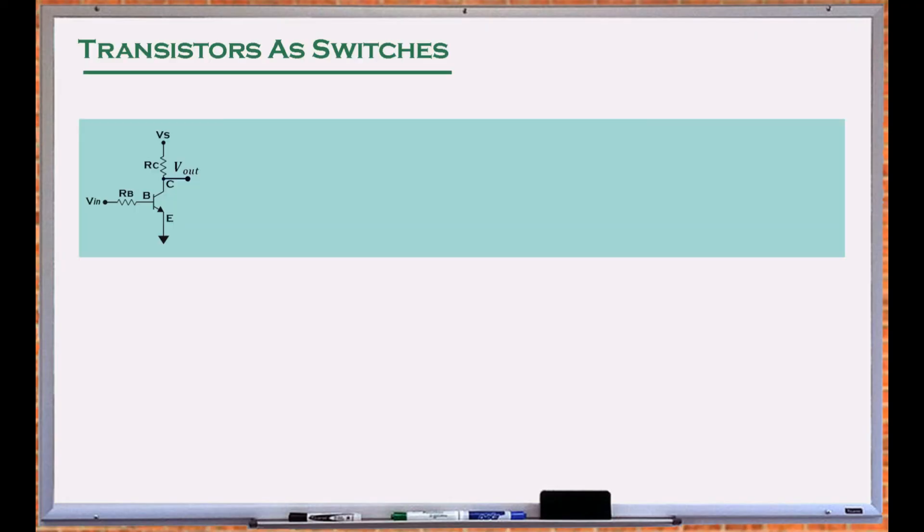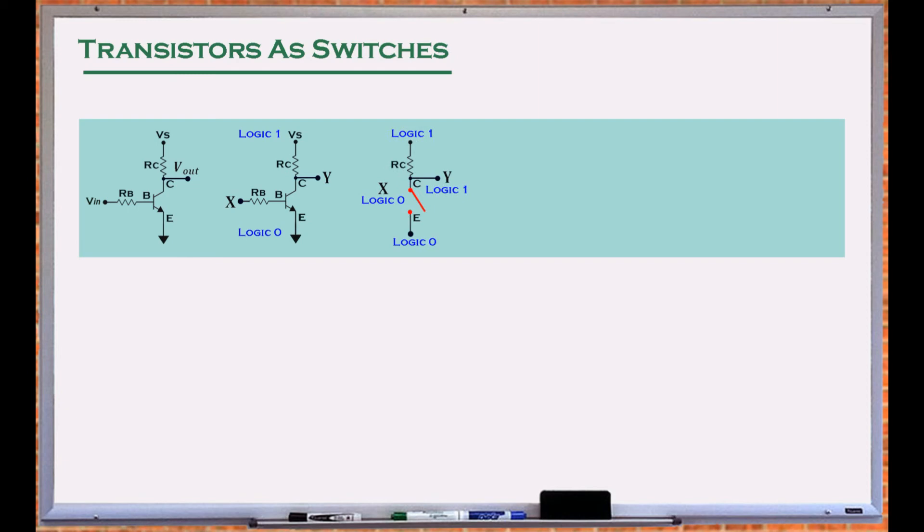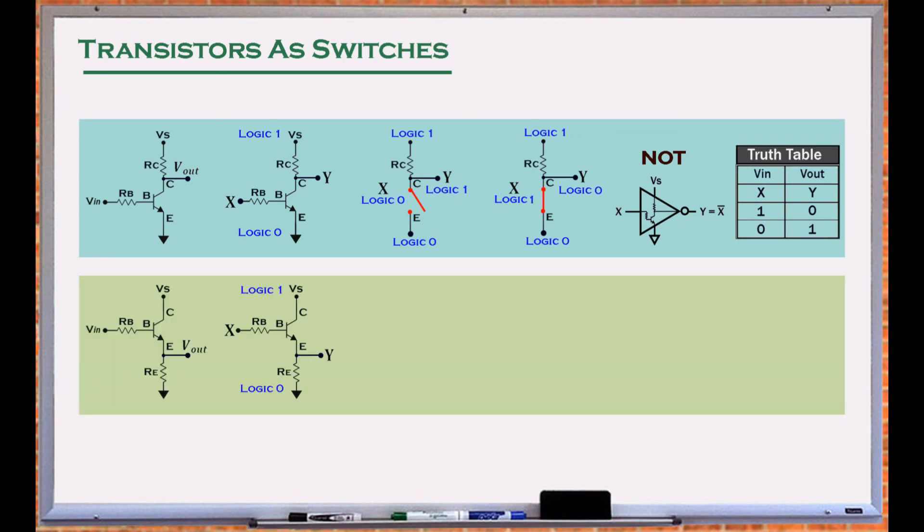Transistors, when used as switches, are the basic building blocks of all logic gates. As a switch, 0 volts defines logic low, and the supply voltage level defines logic high. If the input of the NPN circuit is at logic 0, the transistor is in its cut-off region. It acts as an open switch resulting in logic 1 at the output. On the other hand, if the input is at logic 1, the transistor is in its saturation region and on, making the output logic 0. This circuit works as a NOT gate. Similarly, we can verify the circuit of a non-inverting switch, or a buffer gate.